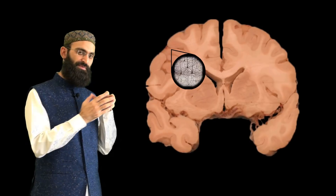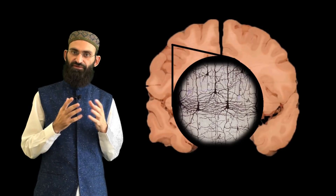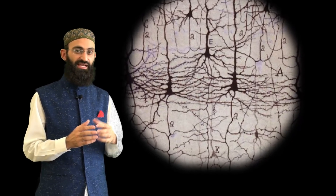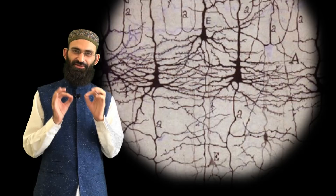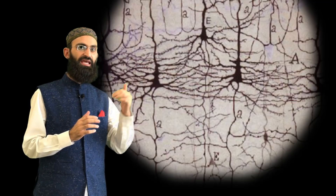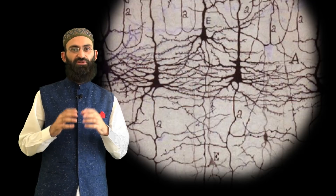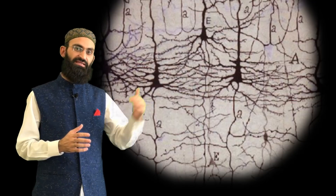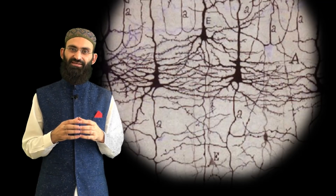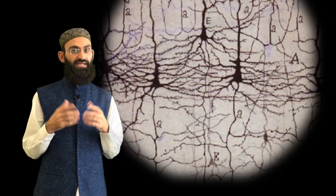Looking microscopically at the cerebral hemisphere outer layer, you will find different types of neurons arranged into six different layers. In layer 5 of the cerebral cortex there is a pyramidal cell — this neuron controls lower motor neurons. These pyramidal cells send their axons all the way down to the brainstem and spinal cord, innervating lower motor neurons and telling them when to fire.